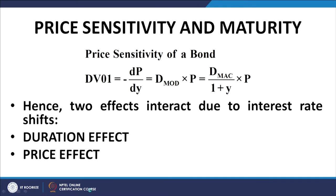It is clear from the intermediate equation that DV01, or the price sensitivity of the bond, is dependent on two factors: the duration of the bond and the price of the bond. The product of the two gives the price sensitivity, and therefore there are two factors that come into play in determining the price sensitivity of the bond.